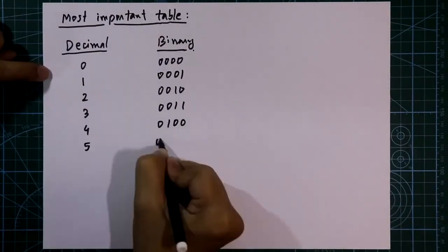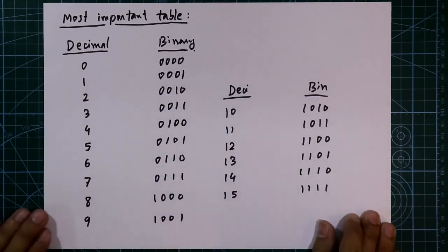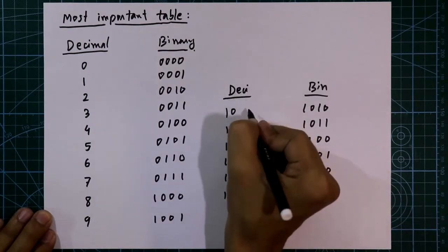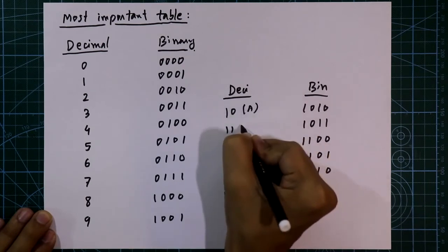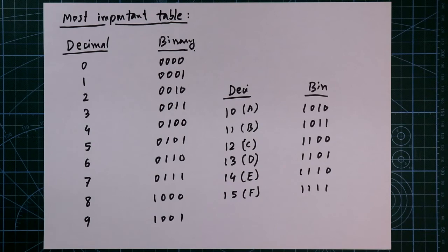Now see the most important table to design a digital logic circuit. We have just written the decimal number up to 15 and its equivalent in binary number system. So these are all the 4-bit binary numbers. And in hexadecimal, A, B, C, D, E, F. And we need this table to design our logic circuits.